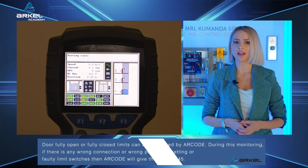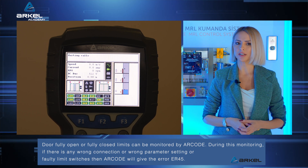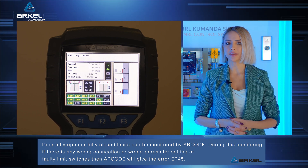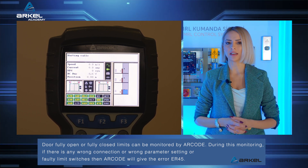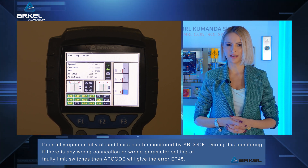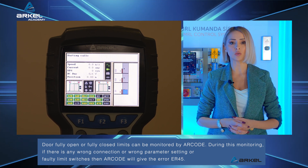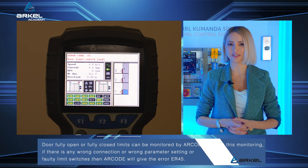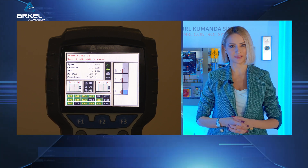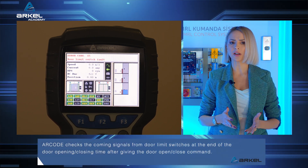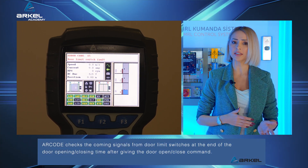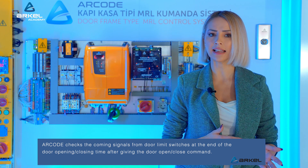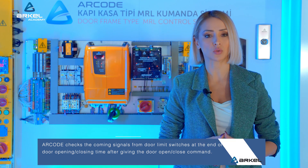Door fully open or fully closed limits can be monitored by Arkel. During this monitoring, if there is any wrong connection, wrong parameter setting, or faulty limit switches, then Arkel will give the error ER45. Arkel checks the signals coming from door limit switches at the end of the door opening and closing time after giving the door open or close command.